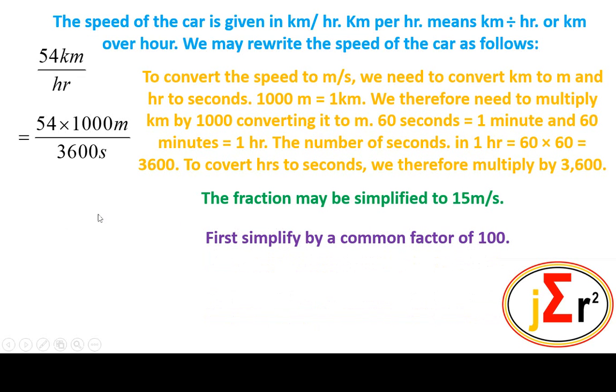We do that simply by striking off two zeros from both numerator and denominator. That's a simple way to demonstrate that we are simplifying by a common factor of 100.